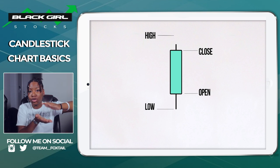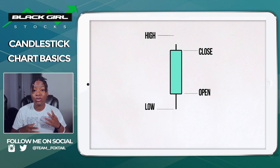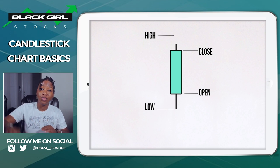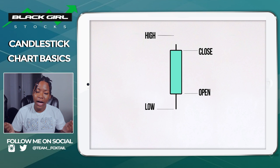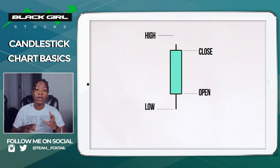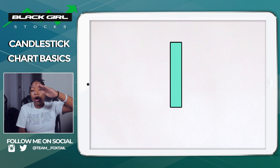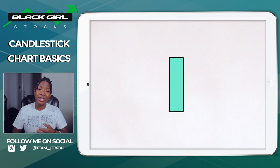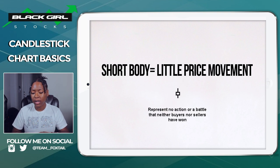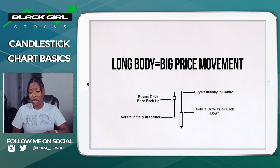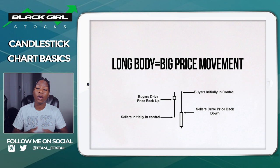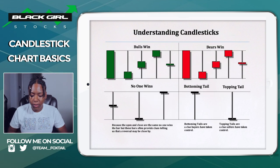If you have a shorter upper shadow, that means the closing price was really close to the high — you want your close to be near the high because that's a sign of an uptrend. The relationship between those two tells you the character of that daily chart or whatever time frame you're using. The body can be long or short — a shorter body means there wasn't a lot of price movement, while a long body means there was a lot of activity at that time.